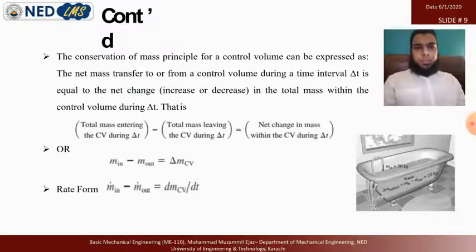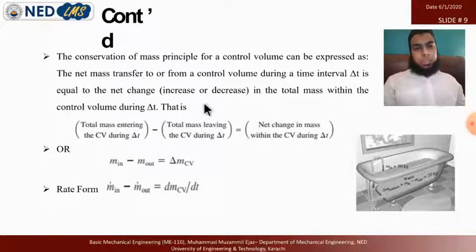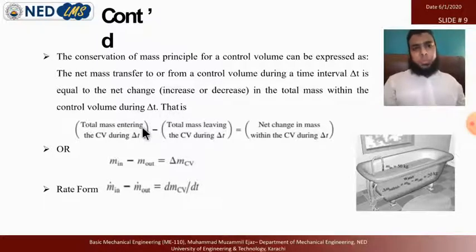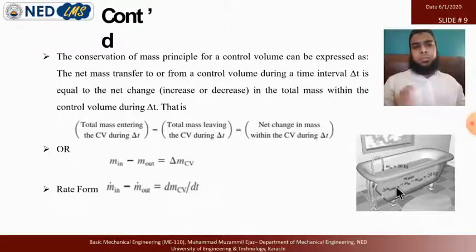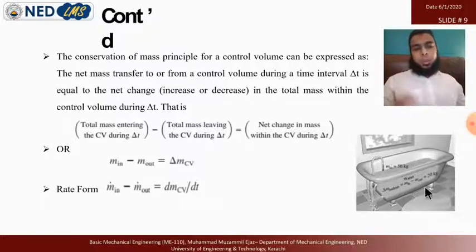The conservation of mass principle for a control volume states: the net mass transfer to or from a control volume during a time interval delta-t equals the net change — increase or decrease — in total mass within the control volume during that interval. For an open system, we select a particular control volume where the volume itself is not changing.